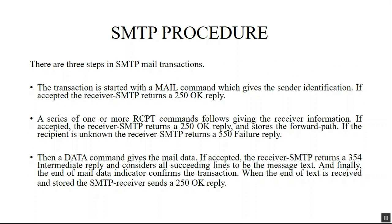There are three steps in SMTP mail transactions. First, the transaction is started with the MAIL command using the sender identification. If accepted, the receiver SMTP returns a 250 OK reply. Then a series of one or more RCPT commands are used for receiver information. If accepted, the receiver SMTP returns 250 OK and stores the forward path. If the recipient is unknown, the receiver returns a 550 failure reply.